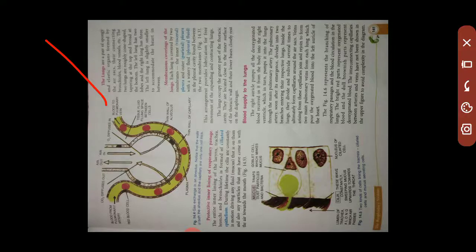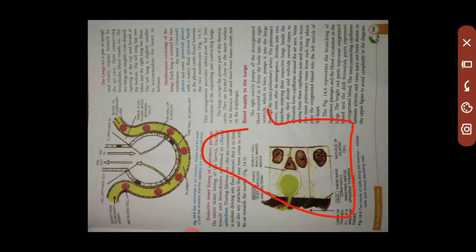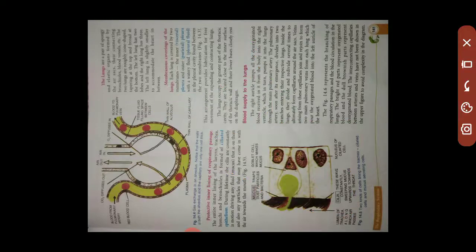The lungs are a pair of spongy and elastic organs formed by air sacs, connecting bronchioles, blood vessels, and more. The lungs are roughly cone-shaped, tapering at the top and broad at the bottom. They are present in the chest cavity, also known as the thoracic cavity. The covering of the lungs is called the pleura — there is an inner pleura and an outer pleura, with the outer being slightly watery and the inner being the visceral pleura.